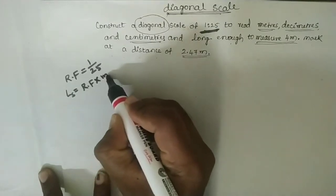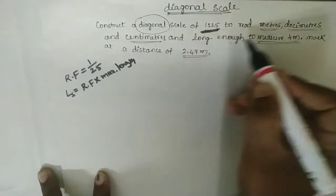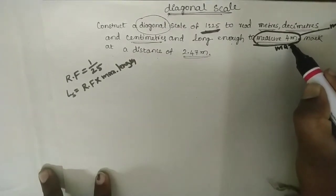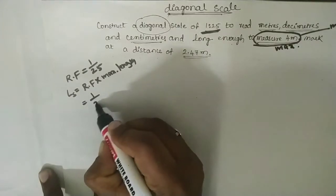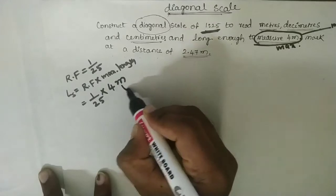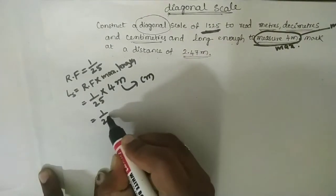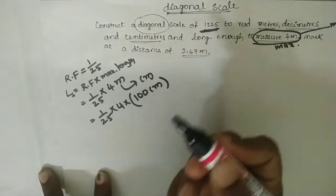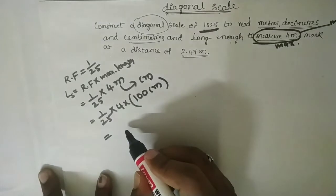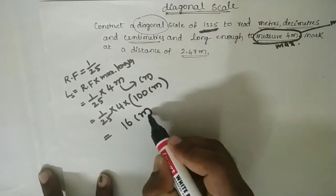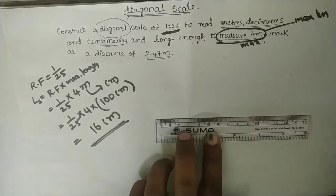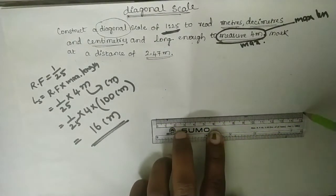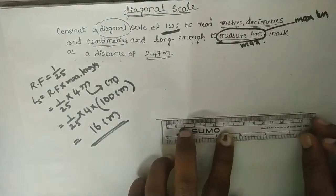Find the LS value: LS equals RF into maximum length. RF equals 1 by 25, maximum length equals 4 meters, so LS equals 1 by 25 into 4 meters. Convert meters to centimeters — 1 meter equals 100 centimeters, so 4 meters equals 400 centimeters divided by 25, giving 16 centimeters. The length of the scale is 16 centimeters. Draw one horizontal line of dimension 16 centimeters.